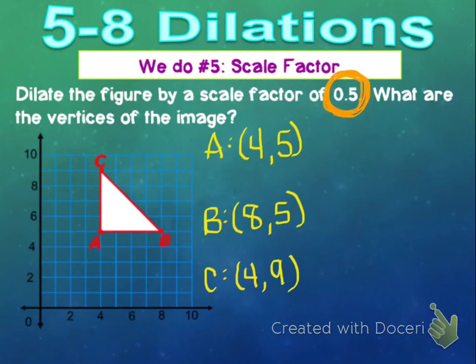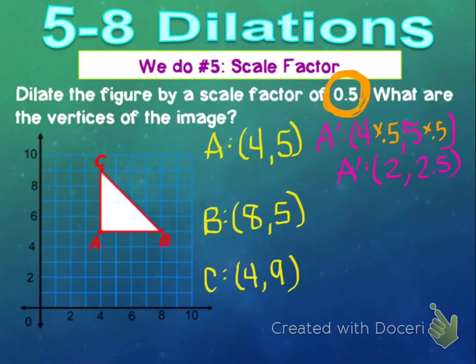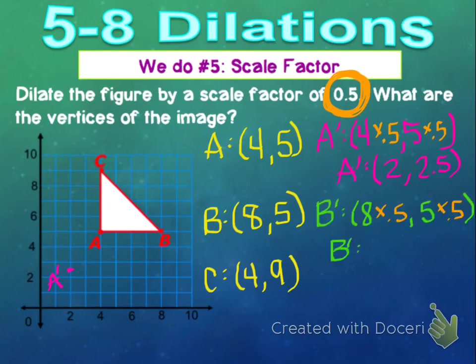Our scale factor is 0.5, so we multiply each coordinate by 0.5. A prime: 4 times 0.5 is 2, and 5 times 0.5 is 2.5 — so A prime is at (2, 2.5). For B prime, originally at (8, 5): half of 8 is 4, and half of 5 is 2.5 — so B prime is at (4, 2.5).